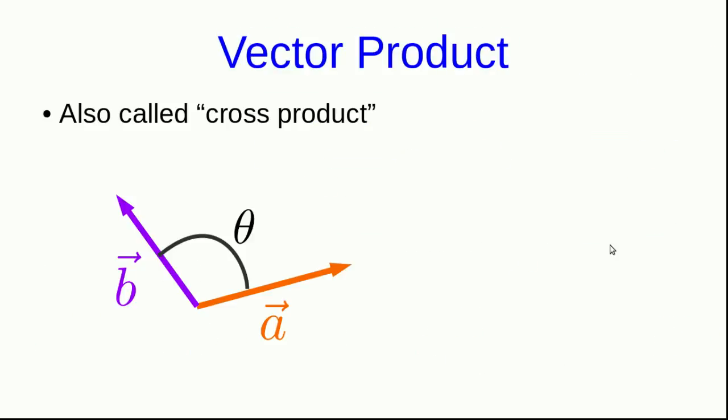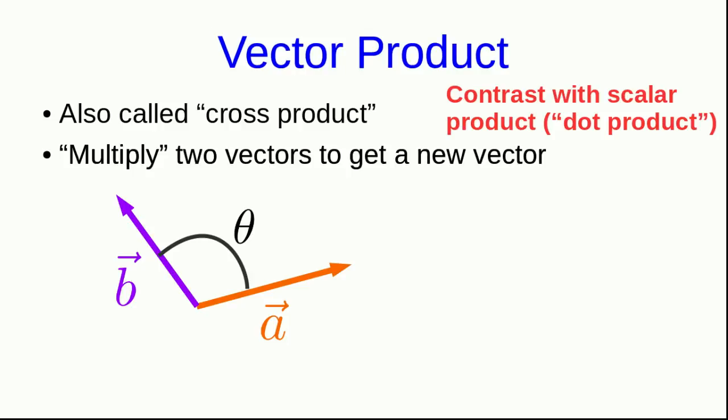Those calculational methods that I've been over so far are not always the most convenient. And so it's time to meet a new way to multiply vectors together called the vector product. It's also called the cross product. And when you take the vector product or cross product of two vectors, you get a new vector, which you should contrast with the scalar product or dot product that we've previously seen, where you take the product of two vectors and you get a scalar. So now let's talk about the vector product of two vectors A and B, which makes some angle theta with each other. And so we'll say that there's some vector C, which is the cross product A cross B.